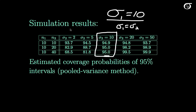Now we let the standard deviation of the second population differ a little bit. When the sample sizes are equal — for example, sample sizes of 10 in both groups — these values are actually still quite close to 95%. So when your sample sizes are equal, having different standard deviations is not a big deal.